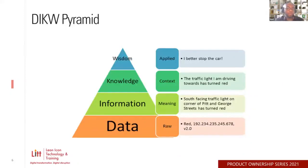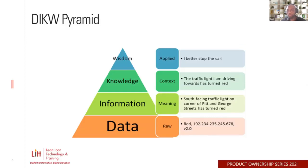There's a pyramid called the DIKW pyramid in data speak. The best way to look at it is from the base going up to the top. It shows how we go from raw data to something tangible and valuable. At the base you have raw data — just numbers that don't really mean anything. But when it's processed and becomes meaningful, it could mean something like 'the south-facing traffic light on the corner of Piton and George Streets has turned red.' That's information.